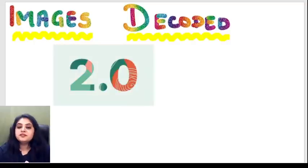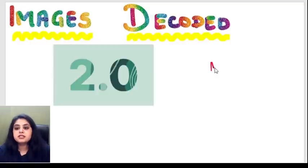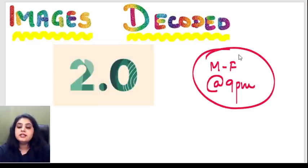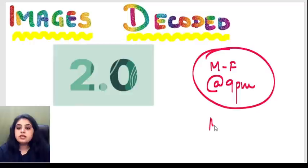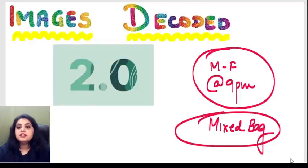Hi everyone, welcome to the fifth session of Images Decoded. For those who are new, this is a daily weekday session, Monday to Friday at 9 PM on the same Unacademy YouTube channel. We've done four sessions having covered cell injury, inflammation, and genetics. Today we have a mixed bag MCQ session on images spanning over these three chapters.